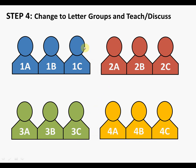Step 4: change to letter groups and teach and discuss. After giving students time to read and discuss in their number groups, ask all the A's to group together, all the B's to group together, and all the C's to group together. Everyone moves their seats accordingly.